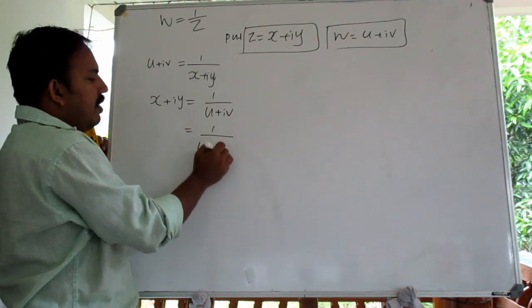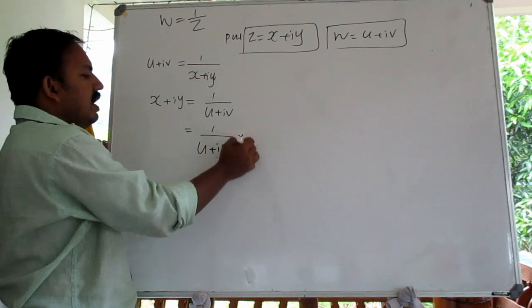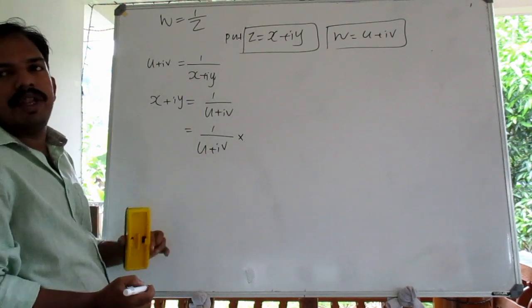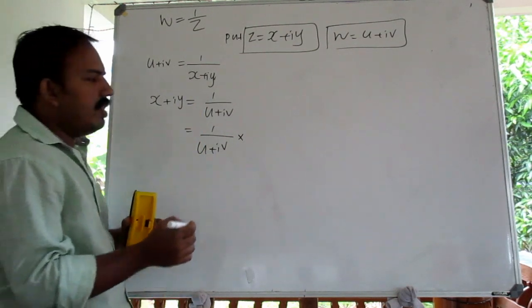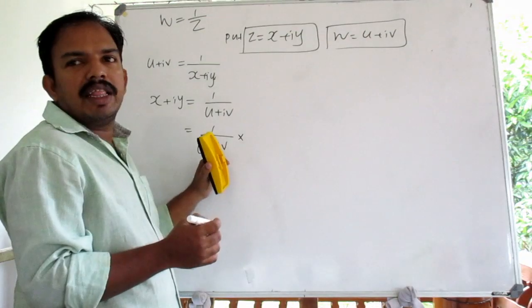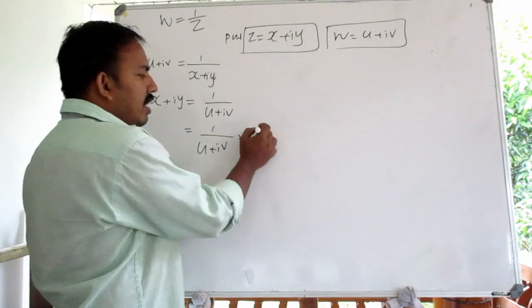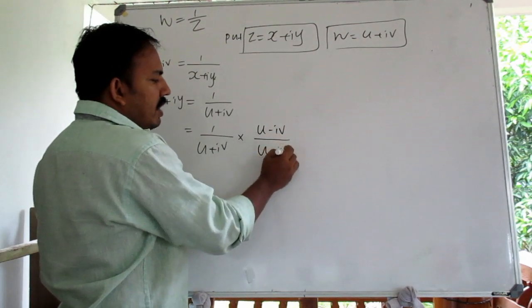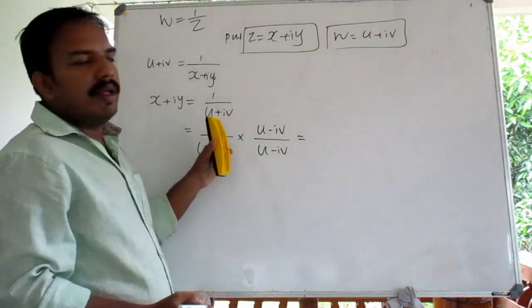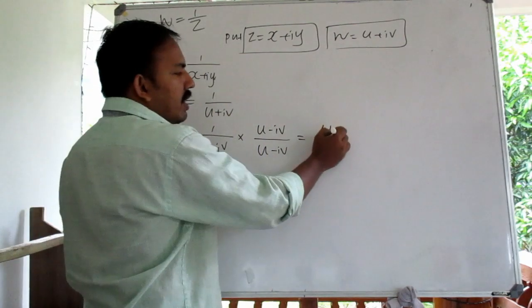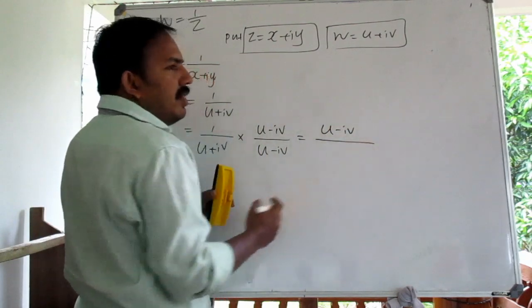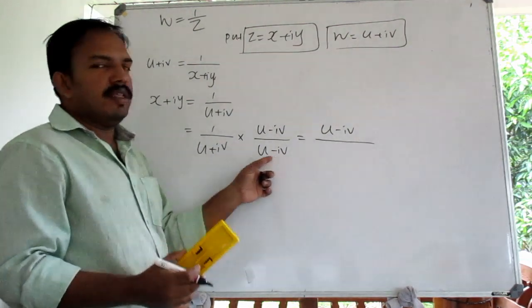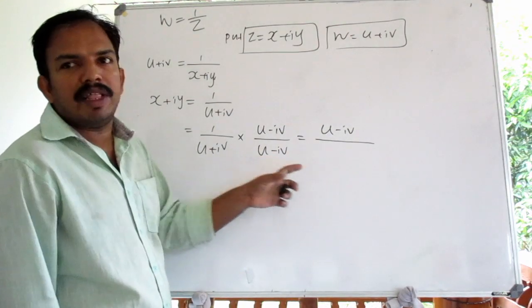To simplify, we multiply both sides by the conjugate: u minus iv over u minus iv. This gives us u minus iv in the numerator.